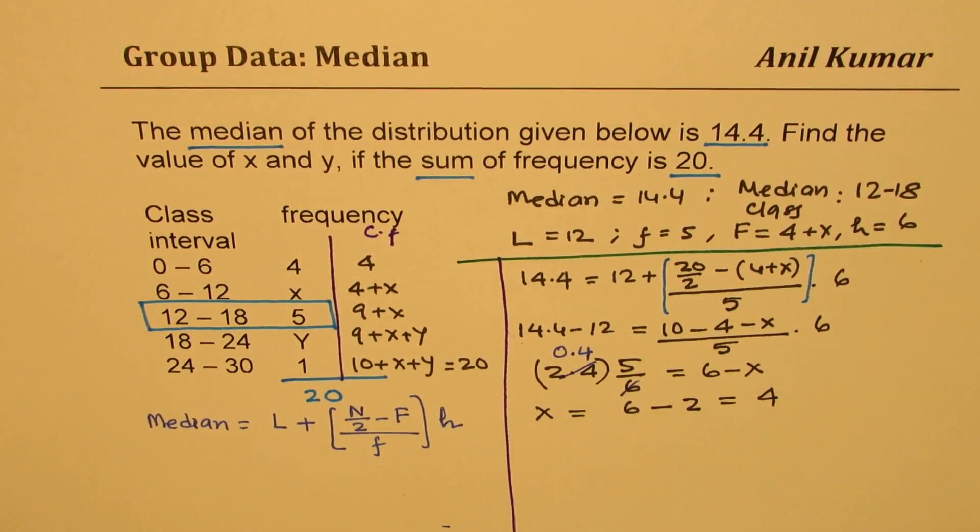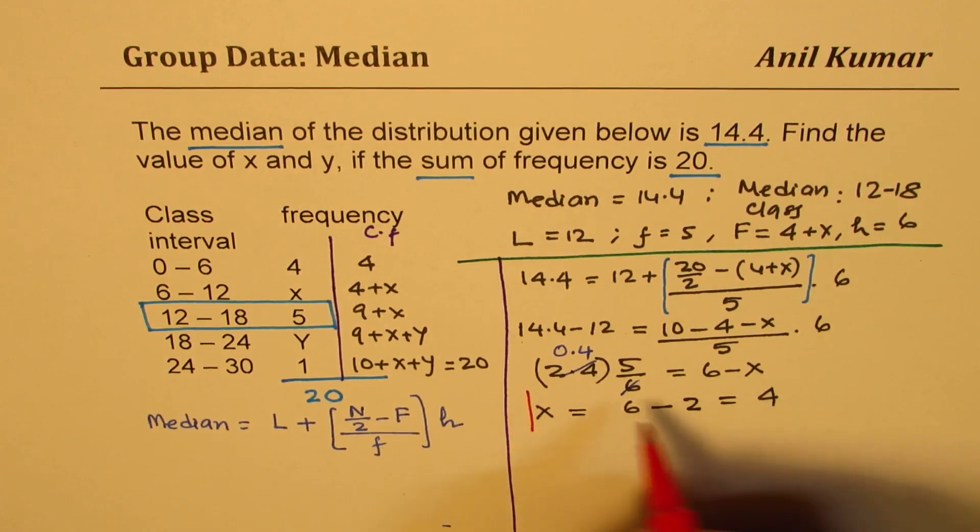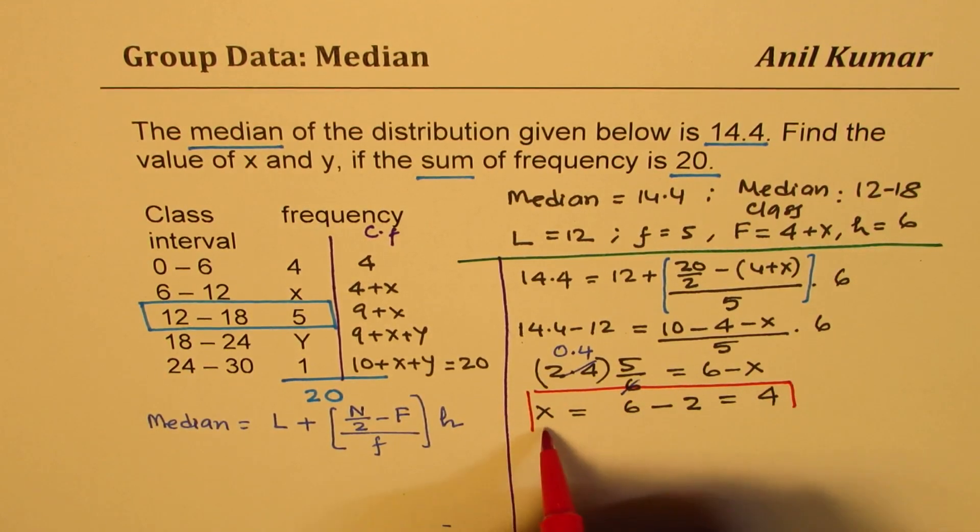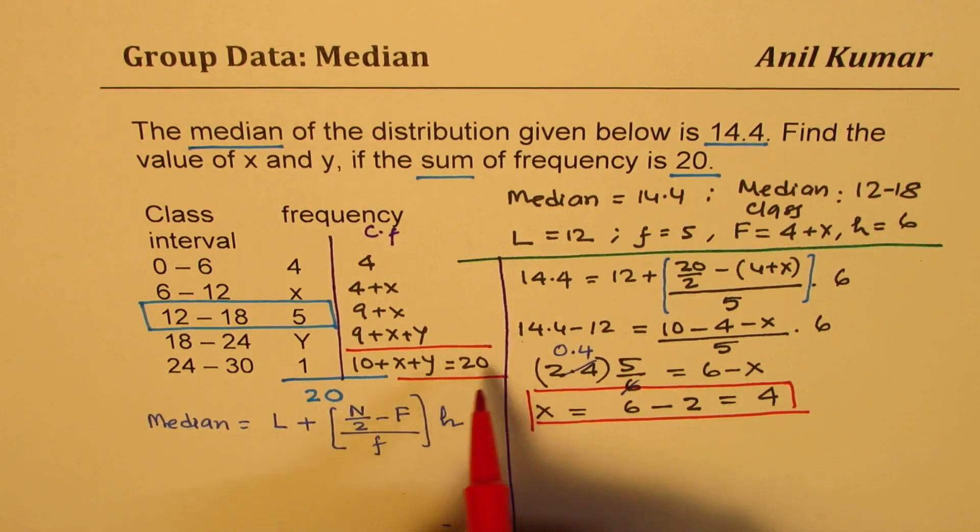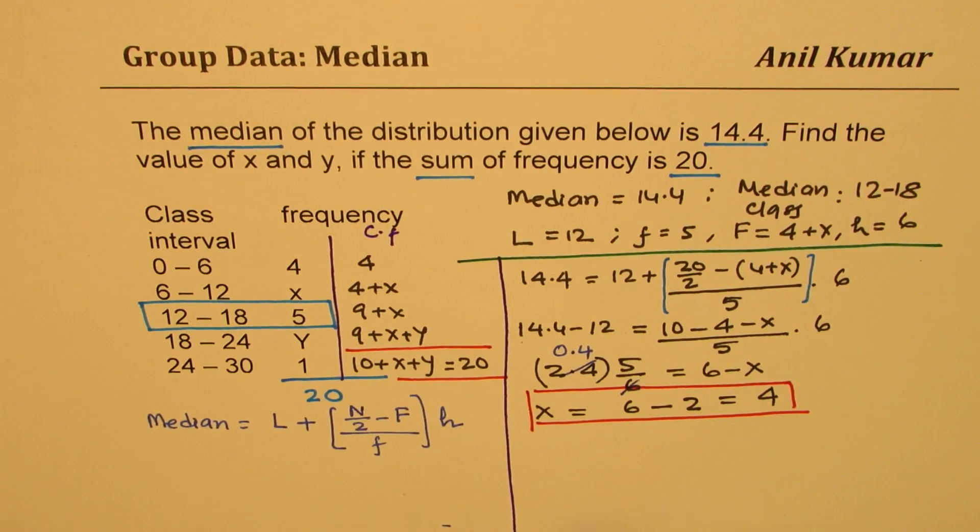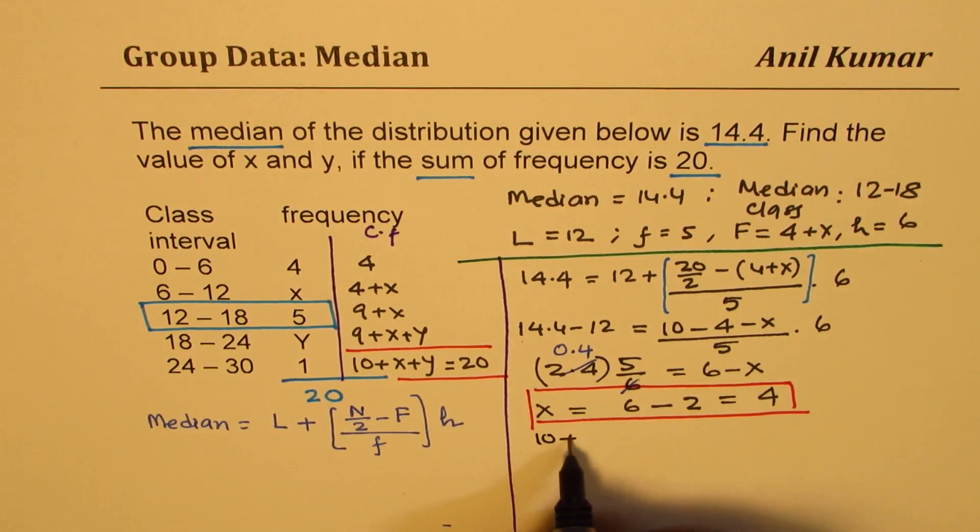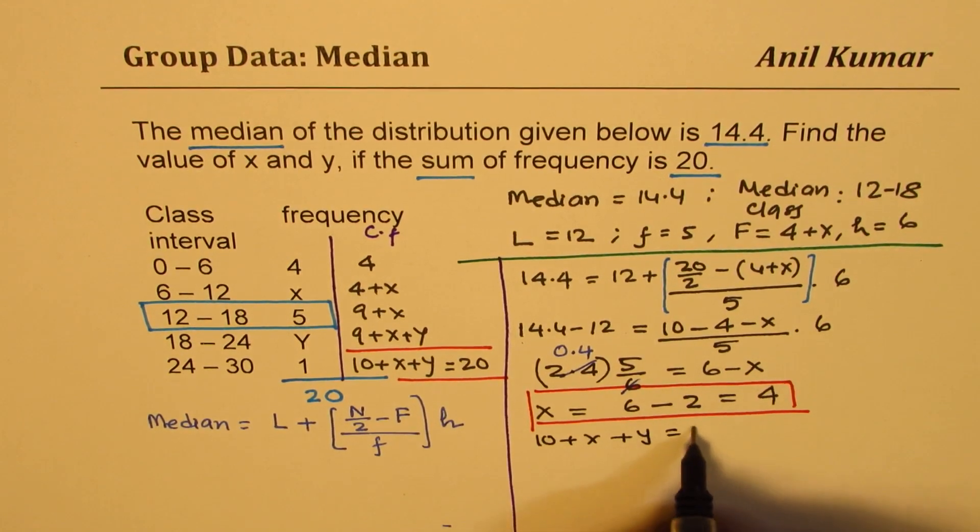Now we get one value. Let me just highlight this portion. And here we have another equation to work with to get the y value. So we know that 10 plus x plus y equals 20.